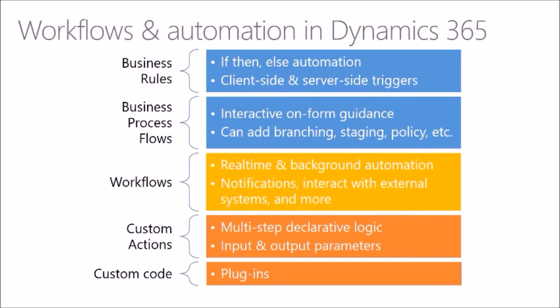Custom actions require developers to some degree, and then business analysts or functional consultants can take those in as well. Custom code is obviously written by a developer. For business rules, it gives us the if-then-else automation. So if field one has a value of X, then make field two required. It can also do simple math and calculations, show and hide fields on forms, and we have options to make this client side or server side. Business process flows give an interactive experience to the user directly on the form, with the ability to enforce policy and approvals, do branching, and trigger more automation — and it's right there on the form for the user.